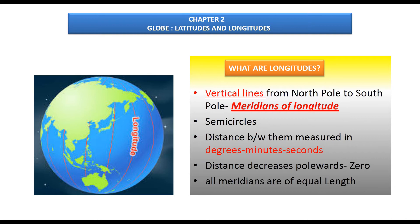Longitudes are imaginary lines drawn on the globe from the north pole to the south pole vertically. These lines are called meridians of longitude. They are semicircles, and the distance between them is measured in degrees. Each degree is further divided into minutes, and each minute into seconds. The distance between meridians decreases towards the poles and becomes zero at the poles, where all meridians meet.